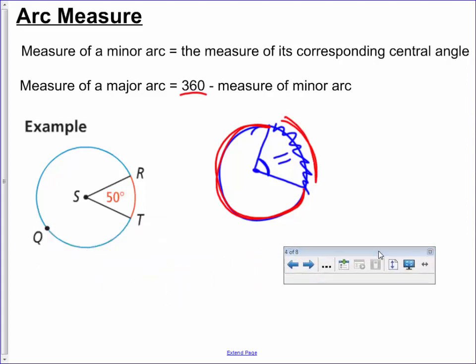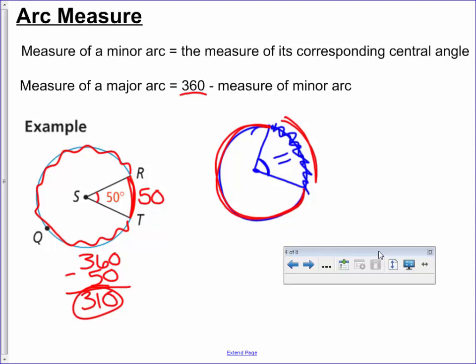Let's look at this example. If it's asking for the measure of minor arc RT, well the angle is 50, so RT is 50. We want to find the major arc. 360 minus 50 gives me 310 for the rest of the arc. I call this my Pac-Man because whatever's inside Pac-Man's mouth equals the angle.